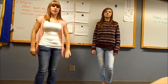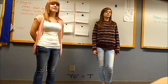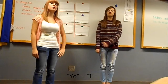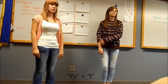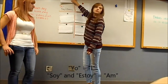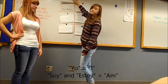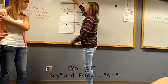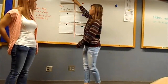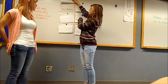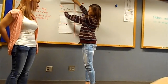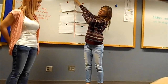The first subject pronoun we'll be going over is 'yo.' Sound familiar? That's because in our first video we explained 'yo' so you could learn introductions. If you remember, 'yo' means 'I.' To conjugate the verbs 'ser' and 'estar,' you use 'soy' and 'estoy.' A really easy way to remember this is that both 'soy' and 'estoy' end in 'oy' — which is 'yo' backwards.